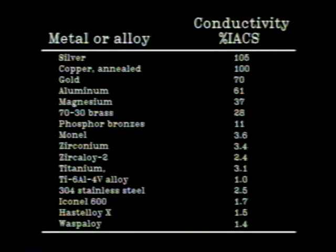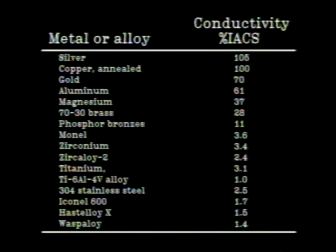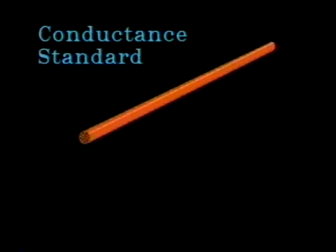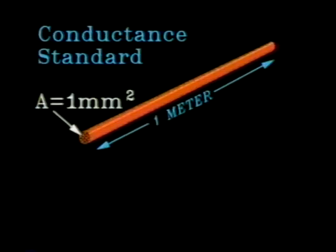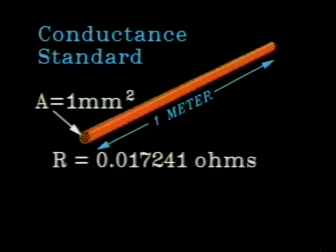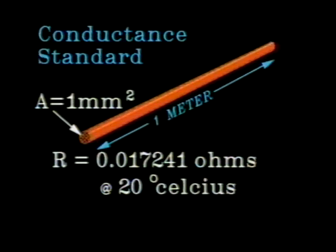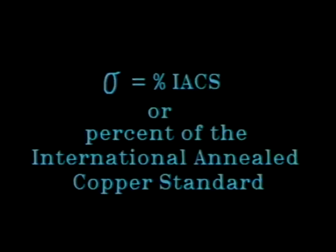In eddy current testing, instead of describing conductance in absolute terms, an arbitrary unit has been assigned, since the relative conductivity of metals and alloys varies over a wide range. The need for a conductivity benchmark is of prime importance. In 1913, the International Electrochemical Commission established a convenient method of comparing one material to another. The commission established that a specified grade of high purity copper, one meter in length and having a uniform section of one millimeter squared measuring 0.017241 ohms at 20 degrees Celsius, would be arbitrarily considered 100% conductive.